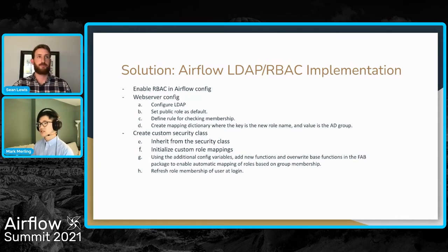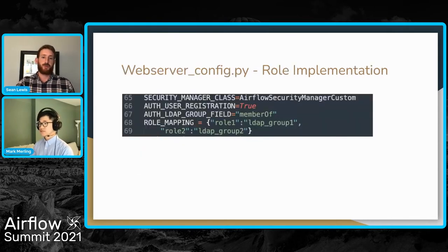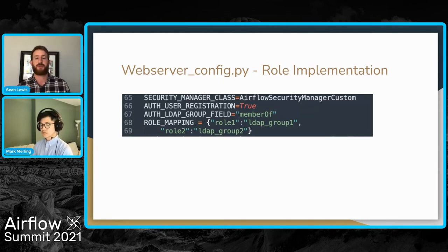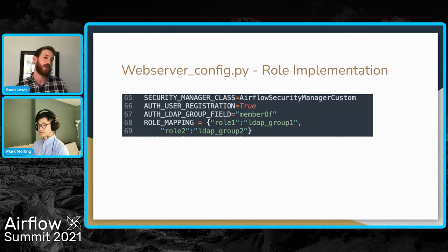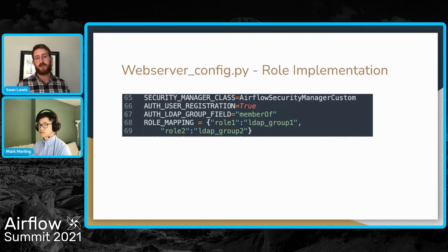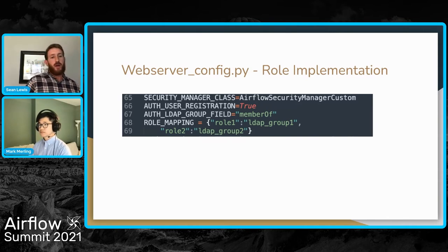In the web server config.py file, you'll notice the security manager class variable — we overwrite that to use our custom class. Next, you'll see the auth LDAP group field. For us it was the 'member of' value in the LDAP configuration, because different users are associated with different groups and the 'member of' field highlights that. Next you'll notice the role mapping — a dictionary of key-value pairs where the key is the Airflow role and the value is the specific group from your LDAP configuration.